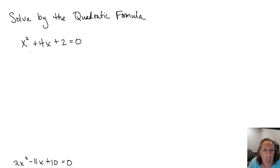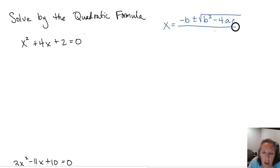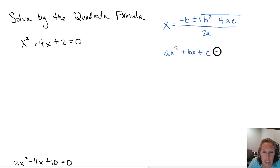Hello, in this video we're going to take a look at a couple of examples of solving a quadratic equation using the quadratic formula. Remember, the quadratic formula is x equals negative b plus or minus the square root of b squared minus 4ac all over 2a. The a, b, and c here correspond to our coefficients in the form ax squared plus bx plus c equals 0.